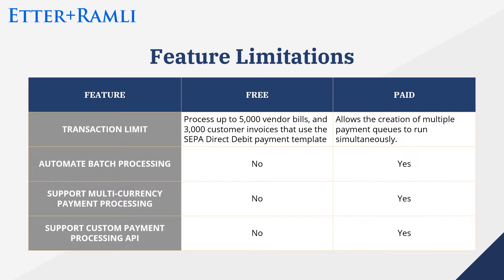The bundle can only process up to 5,000 vendor bills or 3,000 customer invoices in a single run. If you need to process more transactions than this limit, the license will allow you to set up multiple processing queues that can run simultaneously. Apart from that, if you have the Advanced Electronic Bank Payments license, you can set up automated batch processing, process payments for multiple currencies, and create custom payment processing APIs.